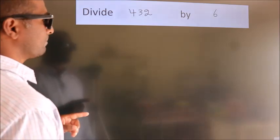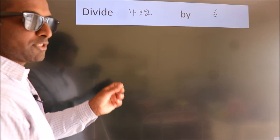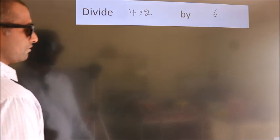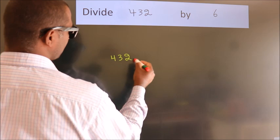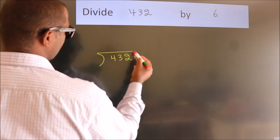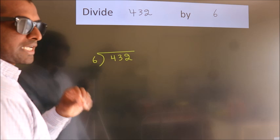Divide 432 by 6. To do this division, we should frame it in this way. 432 here, 6 here. This is your step 1.